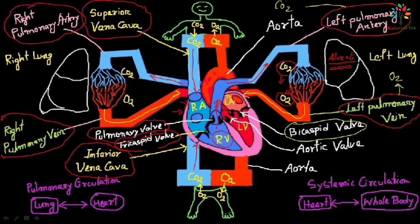Once the blood reaches the left ventricle, there will be ventricular contraction. The blood leaves the heart through the aorta. There is a valve called the aortic valve — the aortic valve prevents backflow of blood into the left ventricle during ventricular relaxation. The oxygenated blood leaves the left ventricle through the aorta and is supplied to all the body parts — both the upper part and the lower part of the body. That oxygenated blood reaches each and every tissue of our body.